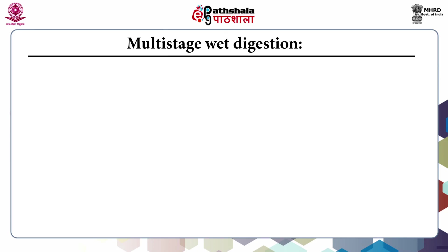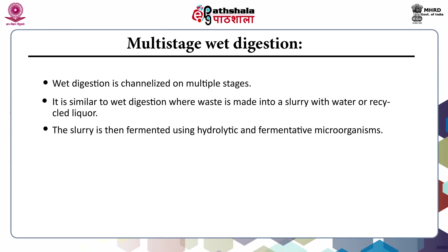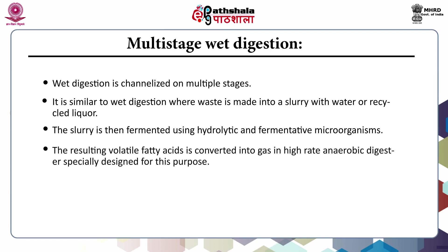The next type is multi-stage wet digestion, where wet digestion is channelized into a number of stages. Similar to wet digestion, the waste is made into a slurry with water or recycled liquor such as digestate liquid. The slurry is then fermented using hydrolytic and fermentative microorganisms. The resulting volatile fatty acids are converted into gas in a high-rate anaerobic digester specially designed for this purpose.